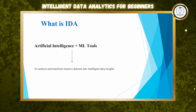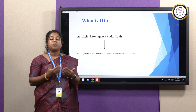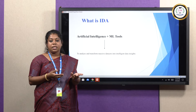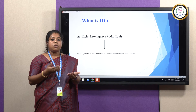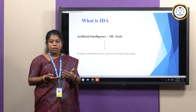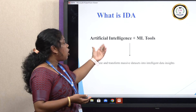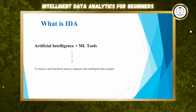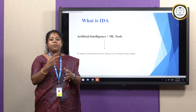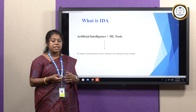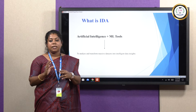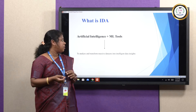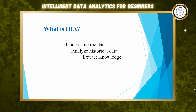IDA requires artificial intelligence, machine learning, pattern recognition, high-performance computing, and visualization. IDA is a combination of artificial intelligence and machine learning tools that analyze and transform data into useful insights. From data collection, we get useful insights — IDA means understanding the data, analyzing historical data, and extracting knowledge.